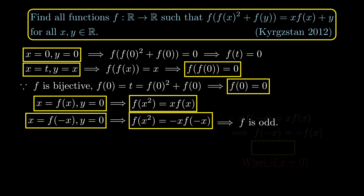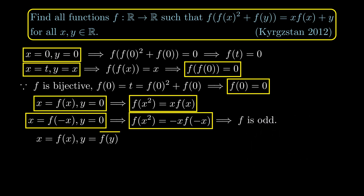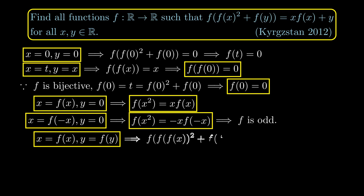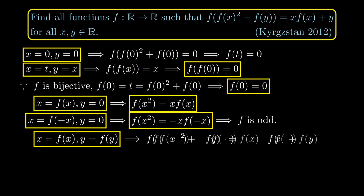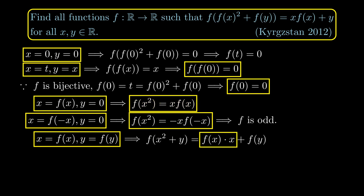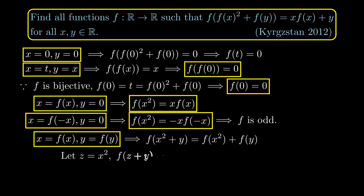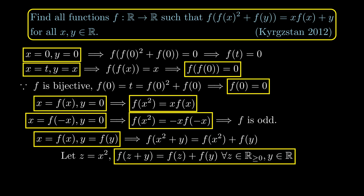We set x = f(x) and y = f(y), and using f(f(x)) = x again, we get f(x² + y) = f(x)·x + f(y). But x·f(x) = f(x²), so f(x² + y) = f(x²) + f(y). Letting z = x² where z can be any non-negative real number, we see that f(z + y) = f(z) + f(y) for all non-negative real z and real y. This is an important property we are going to use.